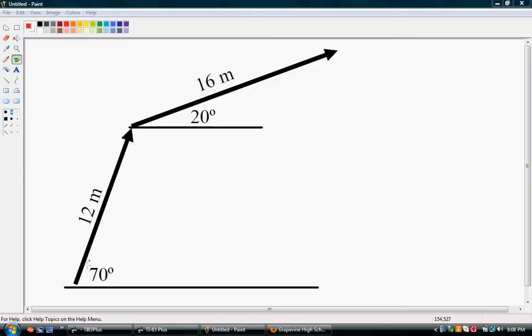Alright, so here we are going to be adding these two vectors. These lines with the arrows are what we refer to as vectors, and they have a magnitude. So this vector is going to be 12 meters long, and this second vector is 16 meters long. And what we want to know is, what is the resultant? So we're going to draw a resultant, and it's going to be from the start point to the end point.